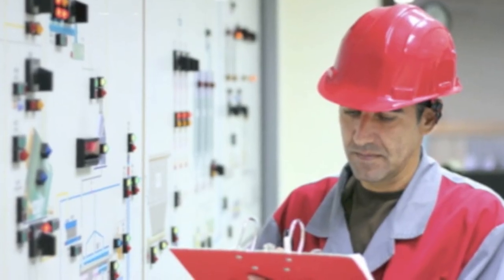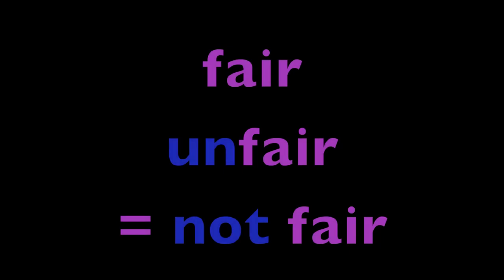Let's look at some common prefixes with their meanings — but some mean different things with different words, so it depends on the context. UN, IN, IL, IM, DIS, NON — these make nouns, verbs, adjectives negative. They mean 'not'. So: fair — unfair, untidy, incomplete, informal, dislike, non-smoker.